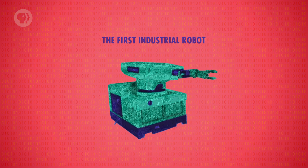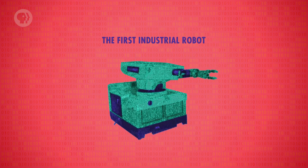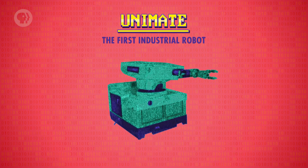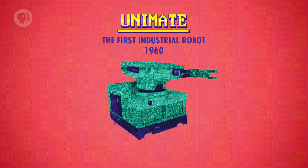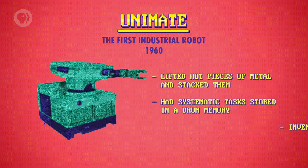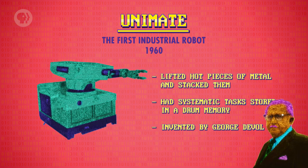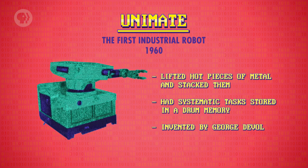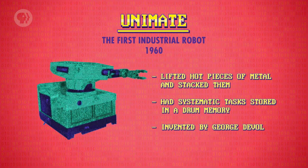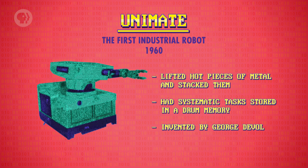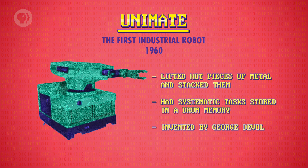The first commercial deployment was a programmable industrial robot called the Unimate, sold to General Motors in 1960, to lift hot pieces of metal from a die-casting machine and stack them. This was the start of the robotics industry. Soon, robots were stacking pallets, welding parts, painting cars and much more.